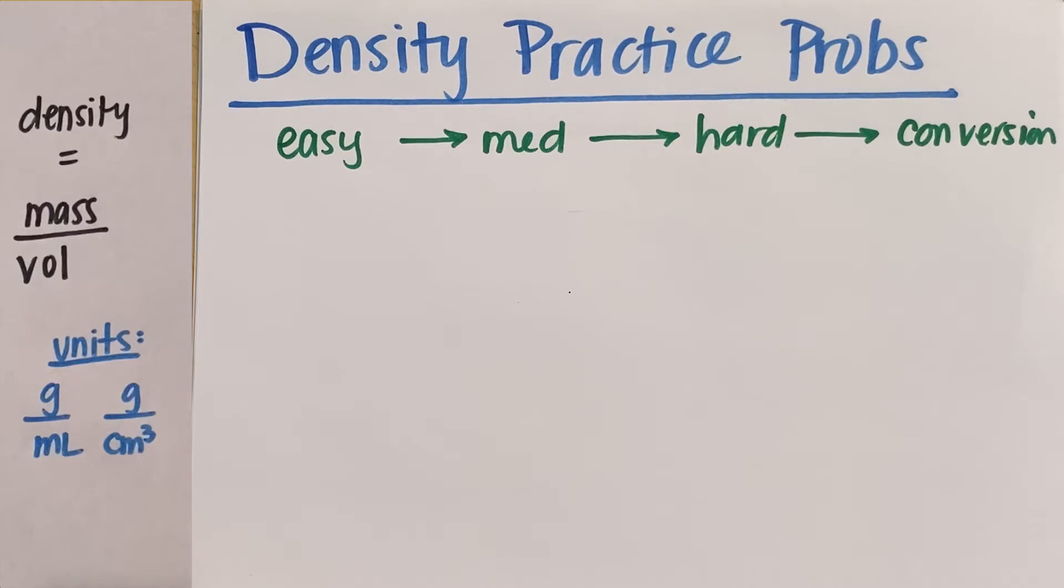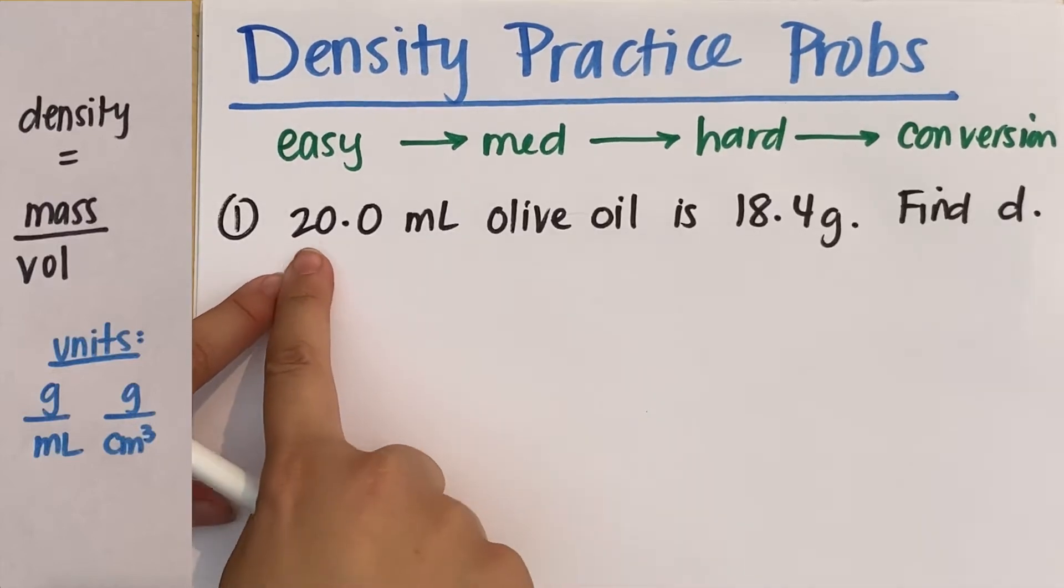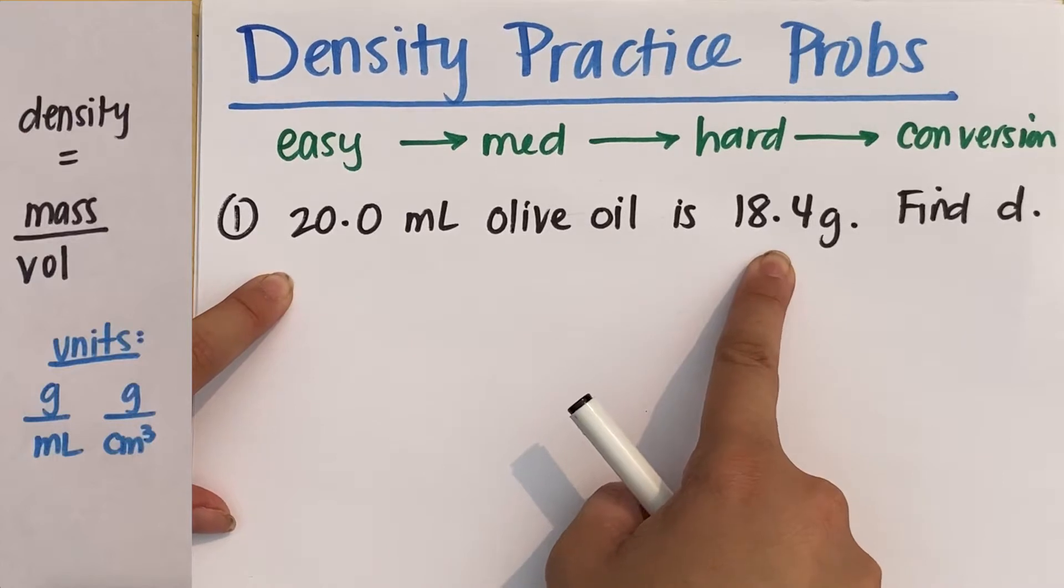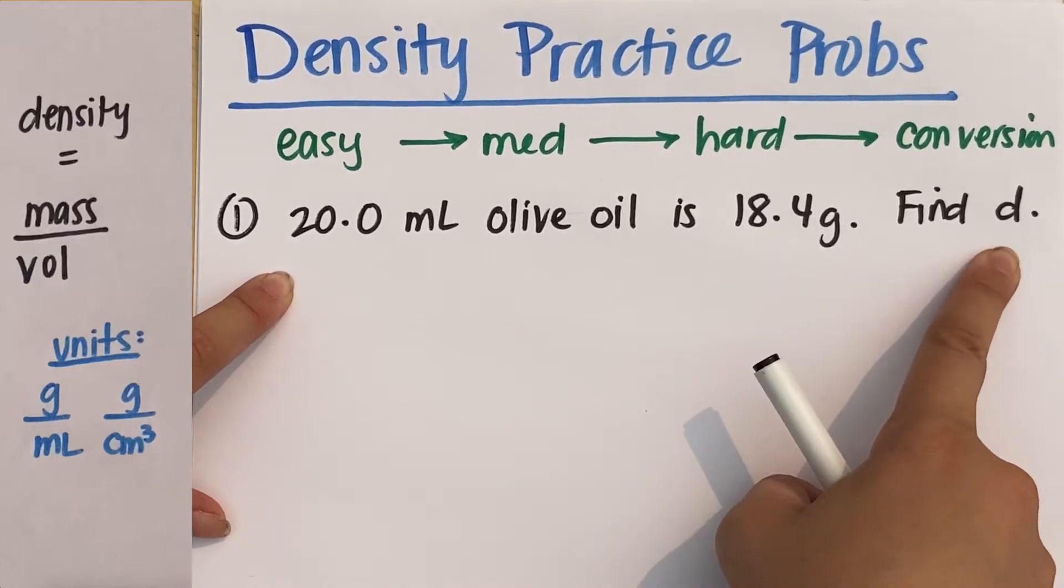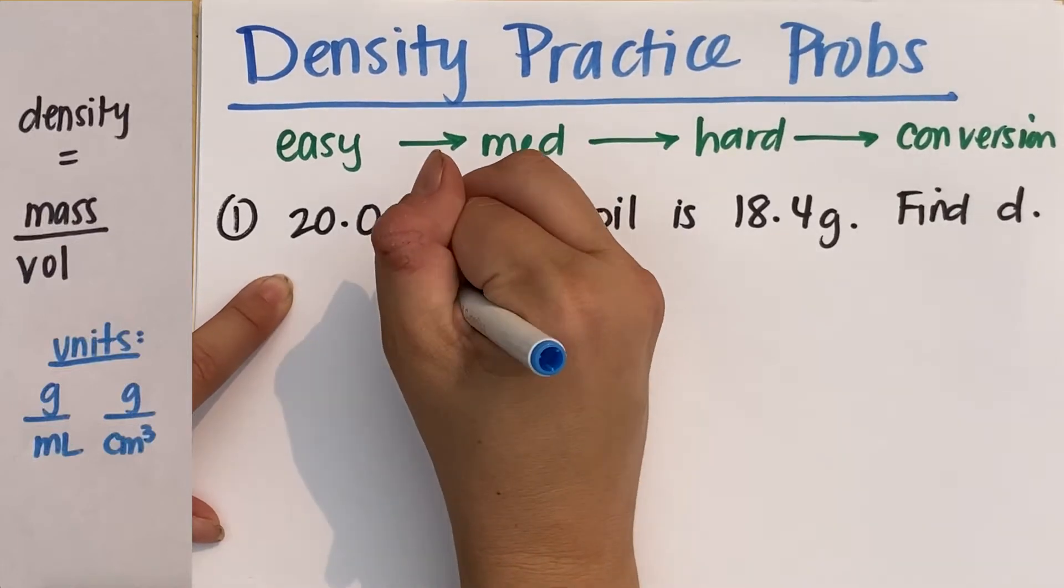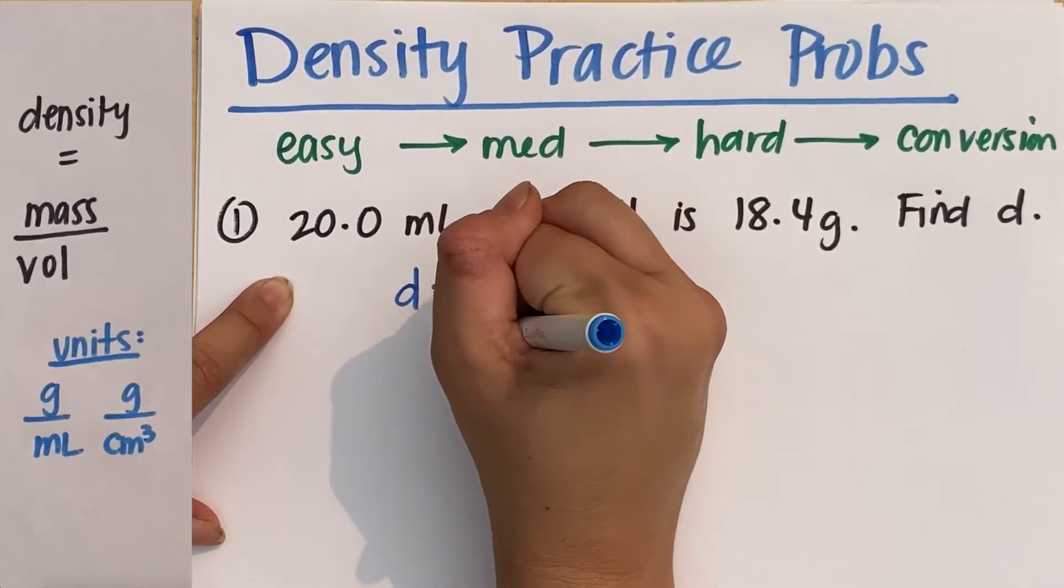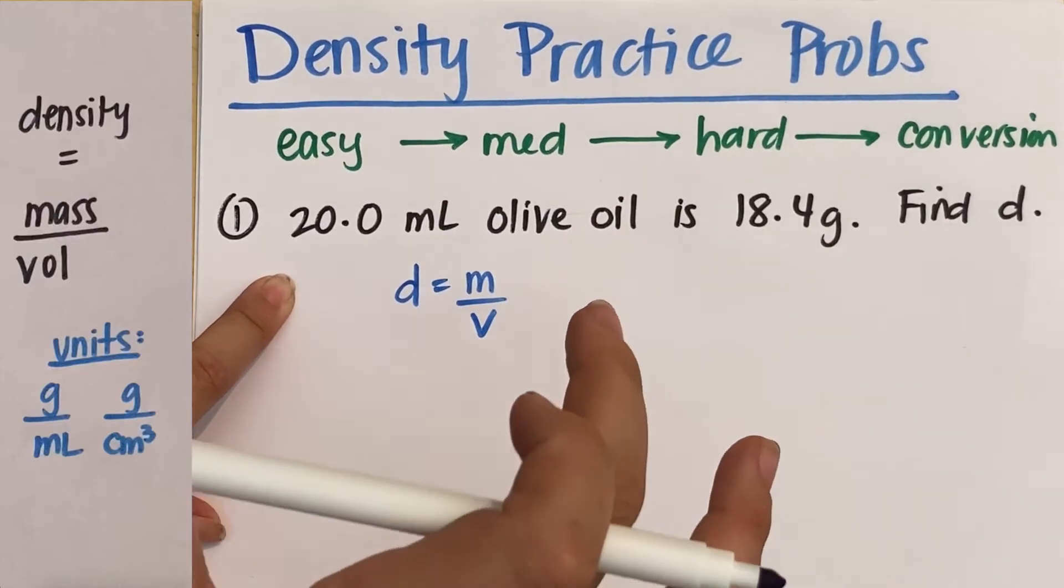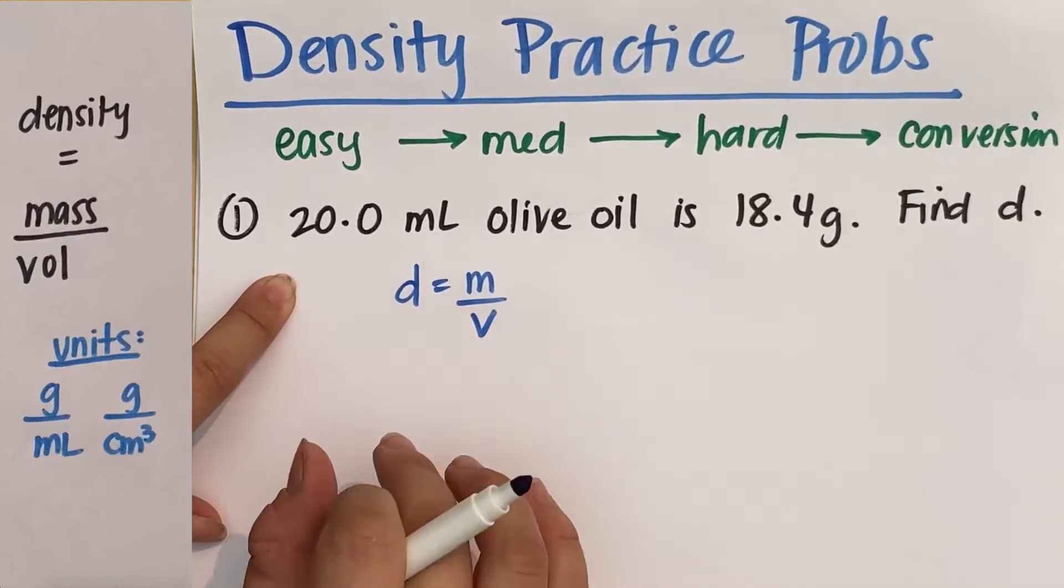Let's just jump right in. Question one: We have 20.0 milliliters of olive oil, and it is 18.4 grams. Find the density. Step one, what I would always recommend you do is just write density equals mass divided by volume. Just write out your equation. That way you will make sure you set up your equation correctly.